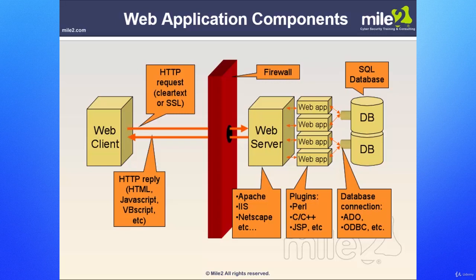Once we actually access the web server, it could have anything from Apache to IIS, Netscape, or similar running on it. We need to figure that out, and a lot of that can be done through the reconnaissance process — finding out what version of IIS or other server software it may be running. We can find that through banner grabbing, error messages, and such. The web applications — plug-ins like Perl, C, C++, JSP, ASP, PHP — will run on top of the web server.